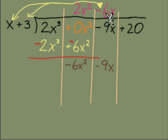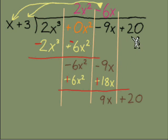As soon as we put that term on top, we're multiplying back down: negative 6x times the x and negative 6x times a positive 3, giving us this negative 6x² and negative 18x. Flip signs and add. The negative 6x² with positive 6x² cancel. Negative 9 plus a positive 18 will leave us with a positive 9x, and we've got another term to bring down, the positive 20.